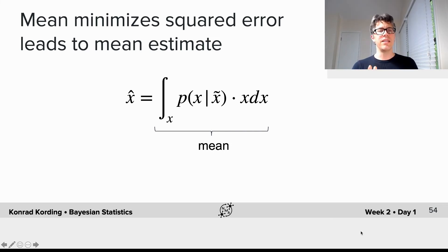What we see is that the mean minimizes the squared error, leading to a mean estimate. The best x̂ that fulfills the previous equation is integral over x, p(x|x̃) times x dx, which is the posterior. This is the expected value of x over the probability distribution defined by the posterior.